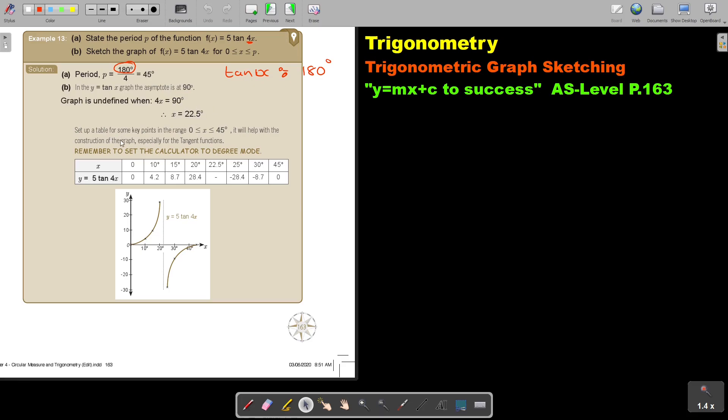So set up a table for some key points in the range. I think, especially for a tan, it's always good to assist you with a table. So it will help with the construction of the graph, especially for the tangent function. They just want it to p and p was the period. So they just want it up to 45. And now, you just divide. You can make it a bit smaller so that you have a more accurate graph. So let's make it 10, 15, 20, 22.5 there, 25, 30, 45. Now, very important. You'll have to remember to set the calculator to degree mode because you are now in degrees.